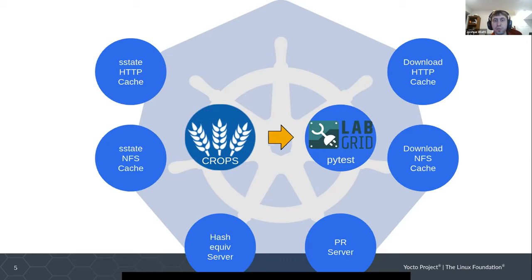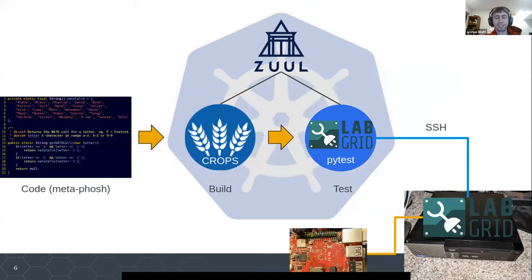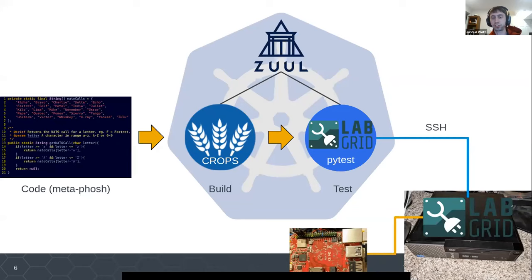All of these ancillary services fit well with Kubernetes because you can spin them up as microservices that go along with your builds. In my previous talk I did all of this with Tekton, but for this one I'm going to talk about doing the same thing using Zuul. The way this works is we ingest code from meta-phosh, build it in a CROPS container, test it on actual hardware using LabGrid and PyTest talking to a computer under my desk running my LabGrid cluster, all managed by Zuul.